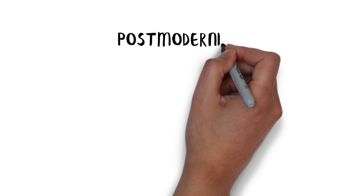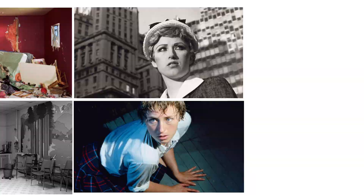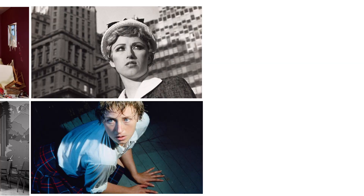The influence of postmodernism on contemporary photography can be seen in its self-reflexivity and questioning of the medium's conventions. Artists like Cindy Sherman and Jeff Wall use photography to construct narratives and explore themes of identity, gender, and the nature of representation. They challenge the notion of photography as a purely documentary or objective medium and instead engage with the constructed nature of images.